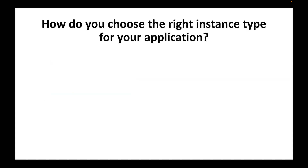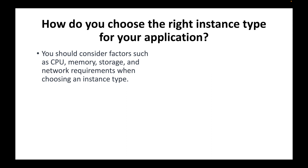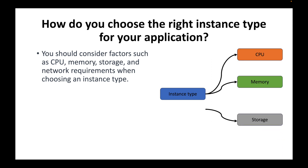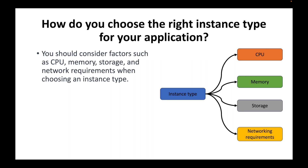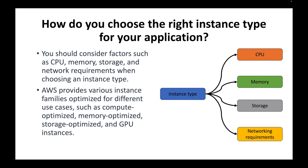The next interview question is: how do you choose the right instance type for your application? Your instance type is simply the hardware components for your server. You'll need to consider how much CPU, memory, and storage you want. Based on that you select the instance type. AWS provides various instance families — compute optimized, memory optimized, storage optimized, GPU instances, and many other types — depending on your use case.